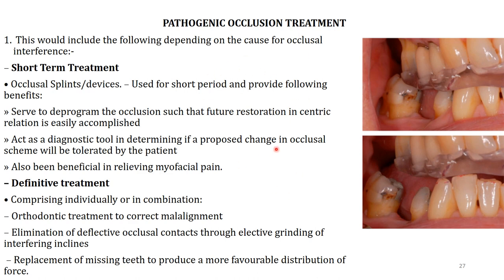Coming to pathogenic occlusion treatments. It can be divided into short-term and definitive treatments. In short-term, we give occlusal splints — used to deprogram the occlusion for future restoration and central regulation. It acts as a diagnostic tool in determining if the proposed change of occlusal scheme will be tolerated by the patient, and it can relieve myofascial pain. In definitive treatment, orthodontic treatment is used to correct malalignment. Replacement of missing teeth should be done and any grinding should be performed if required. The photo shows an occlusal splint.